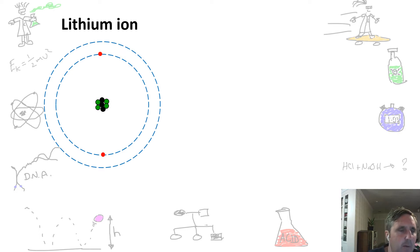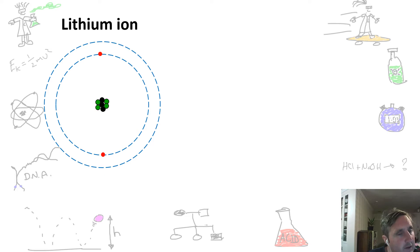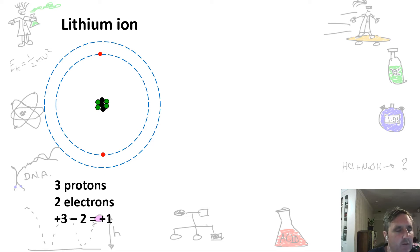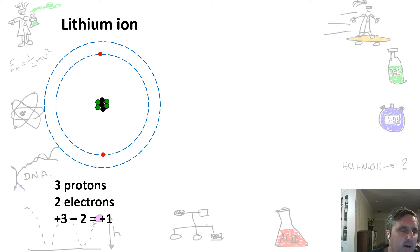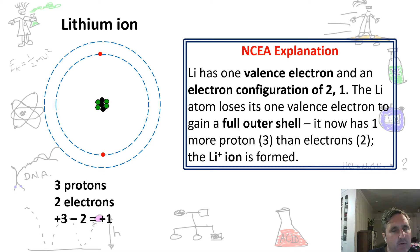So it becomes a lithium ion. It still has three protons but now it only has two negative charges. These two negative charges cancel out two of the positive charges, but one positive charge is left. So it now has a positive charge — it has one more positive proton than it does negative electrons.